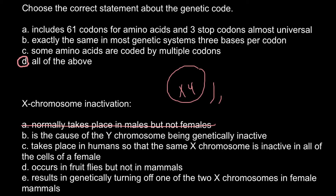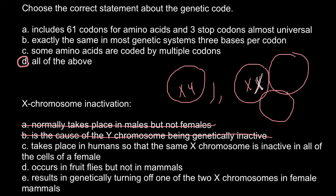An organism can live without a Y chromosome but cannot live without at least one active X chromosome, so we can cross out answer B. Answer C states it takes place in humans so that the X chromosome is inactive in all cells of the female — this is almost true, but only one chromosome becomes inactive and one is always active. In females we have two X chromosomes: one derived from the father's side and another from the mother's side. The female organism consists of around 10 trillion cells, and in each cell we see one X chromosome from the mother and one from the father.